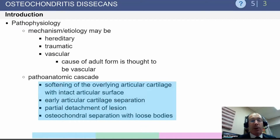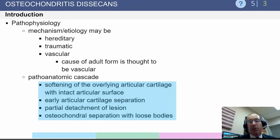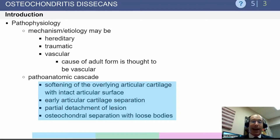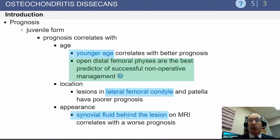The pathoanatomic cascade of OCD progresses from the articular surface down. There's articular cartilage change, then it starts to separate, then it'll detach, develop a fluid level through the subchondral bone, and then the piece can completely detach and become a loose body.